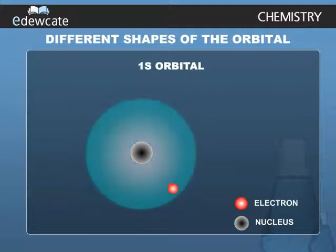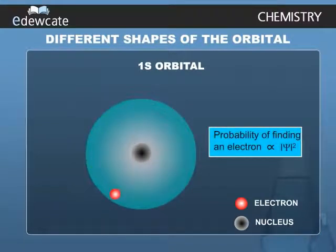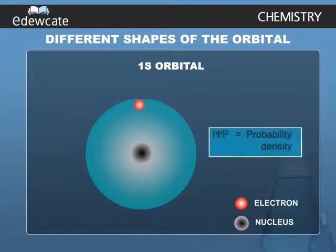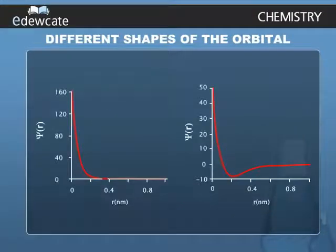The orbital wave function or psi of an electron in an atom has no physical meaning. It is simply a mathematical function of the coordinates of the electron. However, for different orbitals the plots of corresponding wave function as a function of r, which is the radius or the distance from the nucleus, are different.